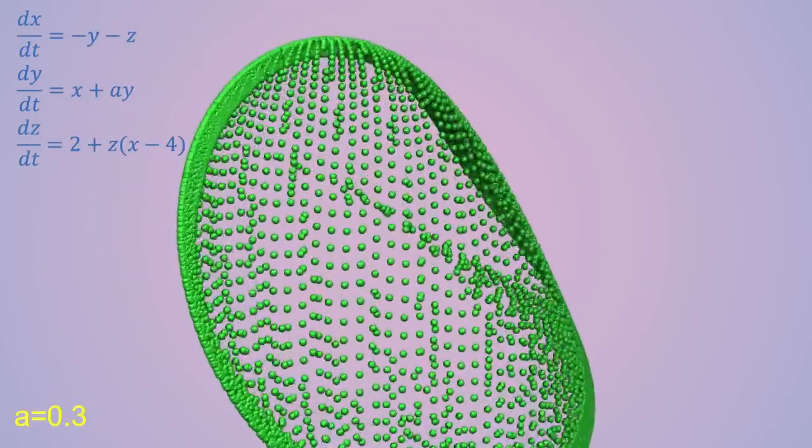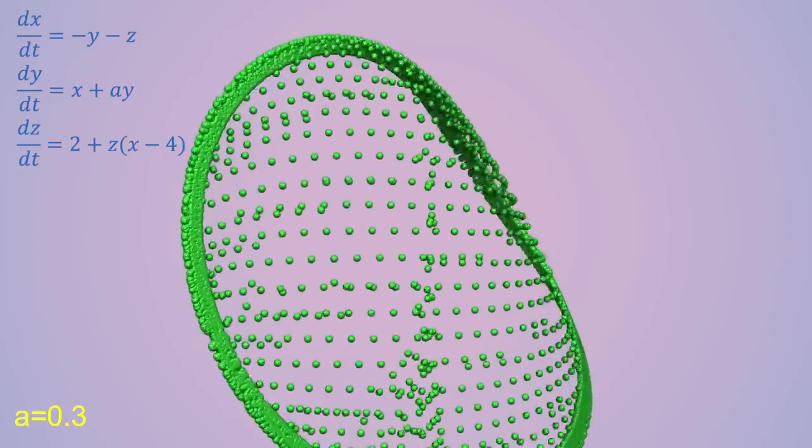After a while, they are all attracted to a single periodic trajectory. No chaos here.